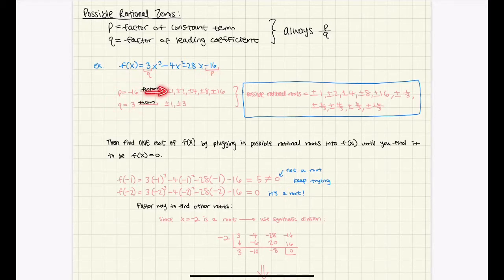You would find the factors of each of these two numbers. So when you find the factors, you get 1, 2, 4, 8, 16, and you would just do plus and minus. It's just a rule. So you would do the exact same thing with 3, so the two factors of 3 are 1 and 3.